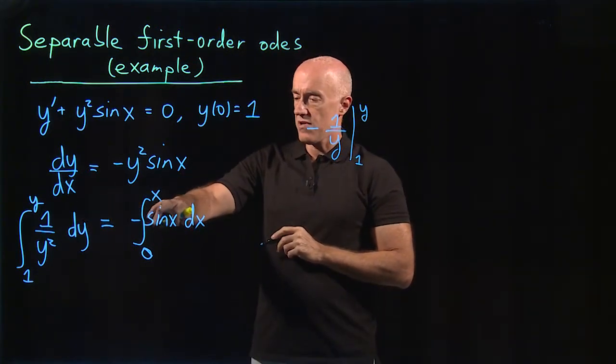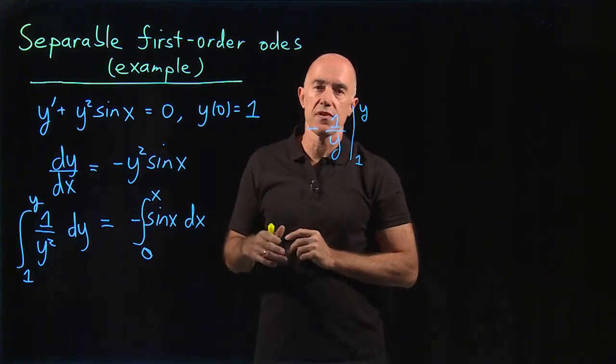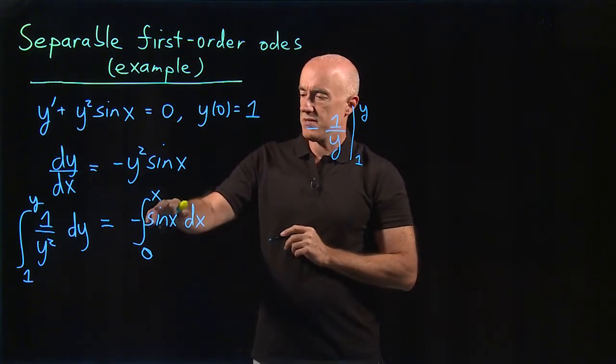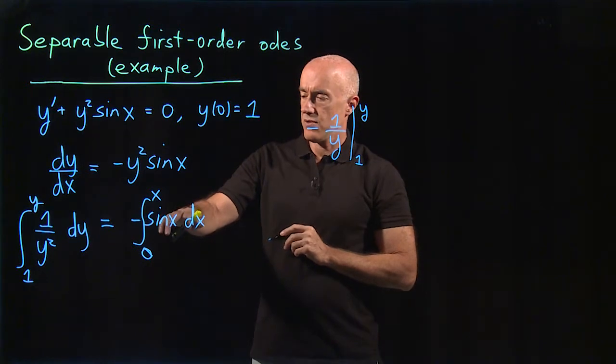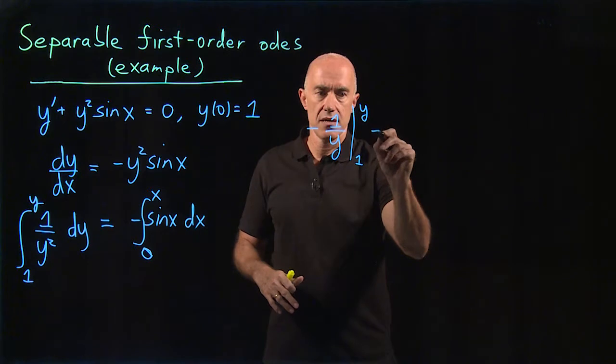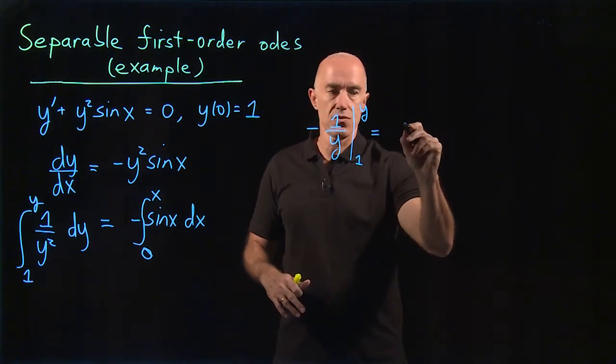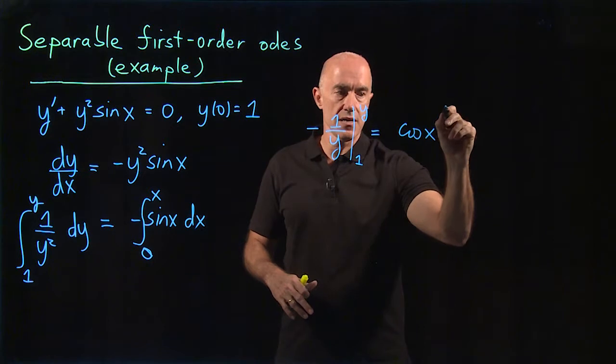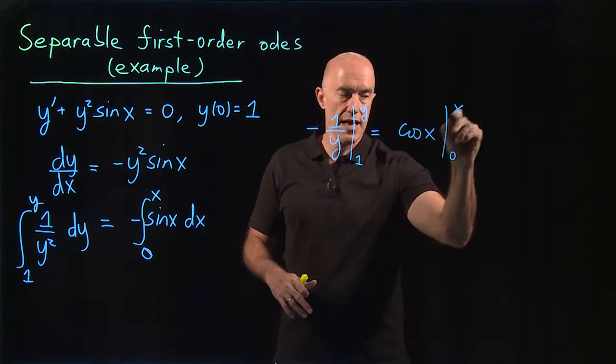The integral of -sin(x)—if you remember, the derivative of cos(x) is -sin(x)—so the integral of -sin(x) is just cos(x). We get cos(x) evaluated from 0 to x.